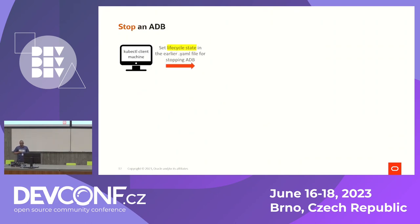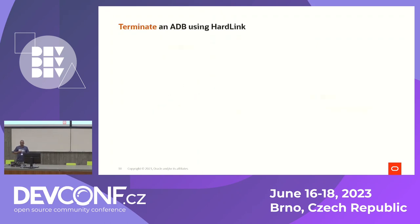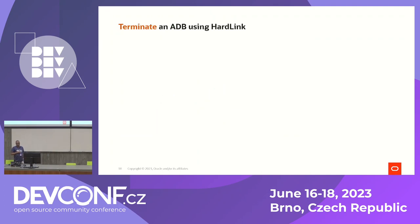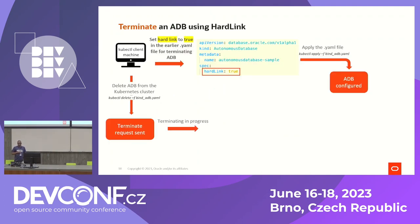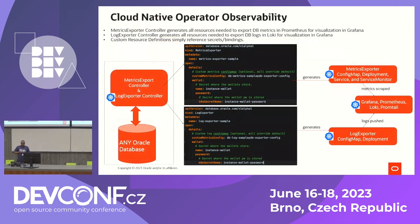Stopping a database follows the same process — depending on the current state, you modify the configuration and check if it's available or terminated. To truly terminate a database, there's a specific hardlink configuration property you set — terminate means you no longer need the database instance, you want to remove the underlying resources, and it will be gone.